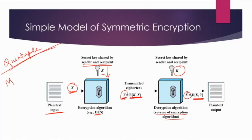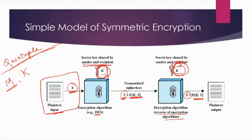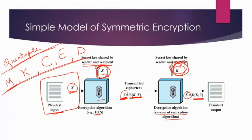We can identify the elements of this crypto system as a quintuple. M is the plaintext message given as input; K is the key shared between sender and receiver; the ciphertext Y is the encrypted output; and E and D are the encryption and decryption algorithms respectively. This is a crypto system that uses the same key at both ends — therefore it is known as symmetric key encryption, single key encryption, or secret key encryption.